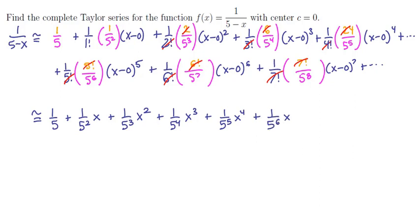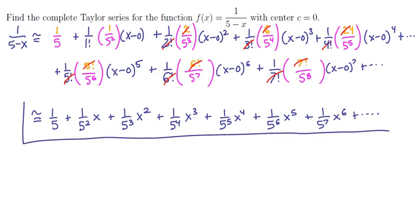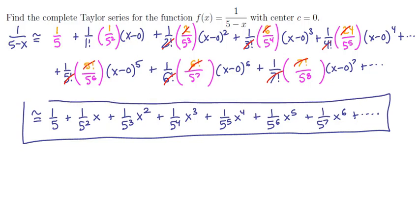We can include the x to the 5th term and the x to the 6th term, continuing the pattern. This series is easily communicated to anyone, and it is the complete Taylor series for 1 over 5 minus x centered at 0.